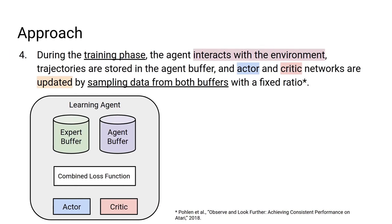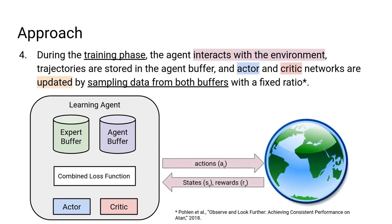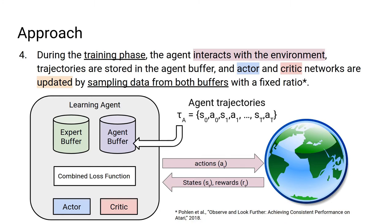During the training phase, the agent interacts with the environment to collect new trajectories, which are stored in a separate agent buffer so the expert samples are never discarded. The training process continues using the combined loss, now sampling from both buffers with a fixed ratio of 25% expert data and 75% agent data.